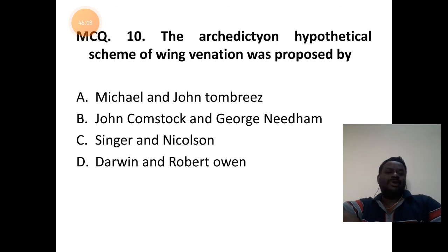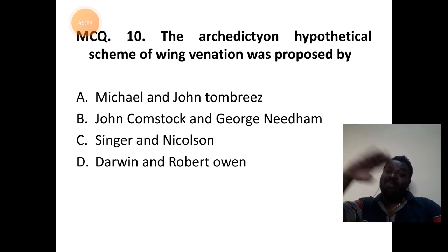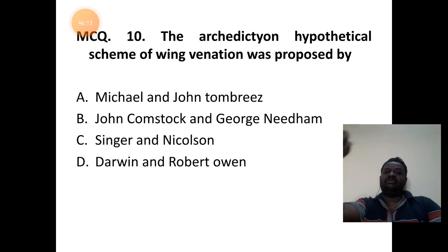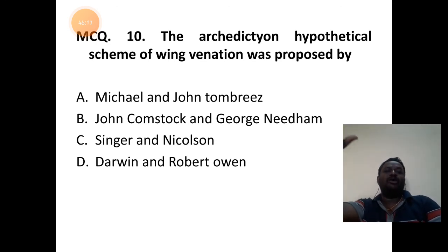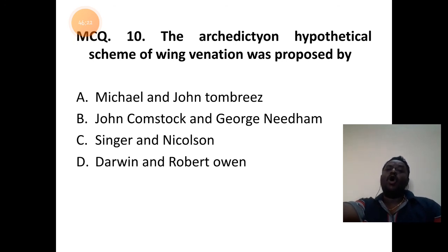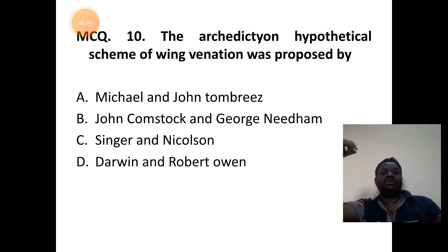The last question: the archidictyon hypothetical scheme of wing venation in the case of insects was proposed by John Comstock and George Needham — we call it the Comstock-Needham system. Answer is B.